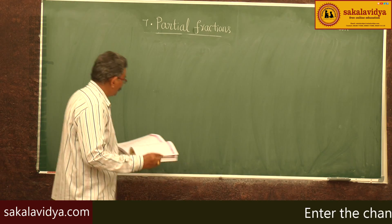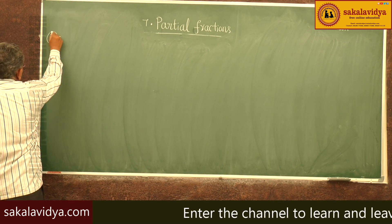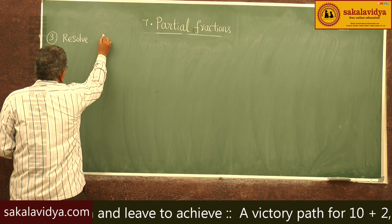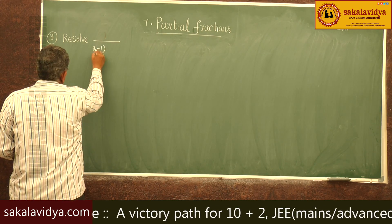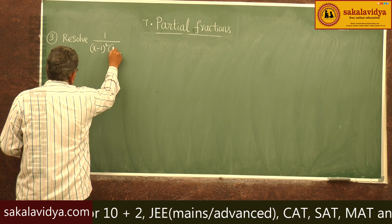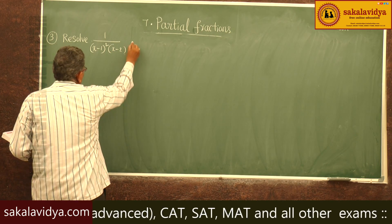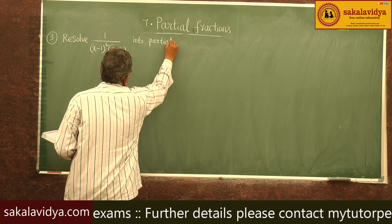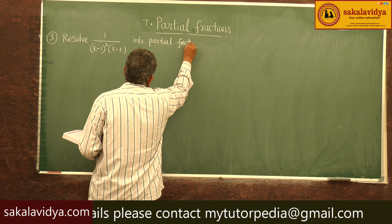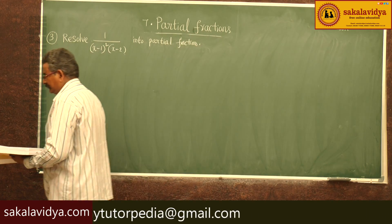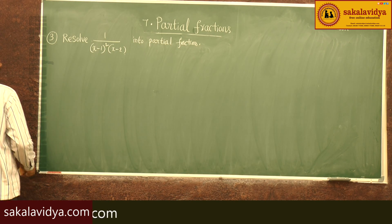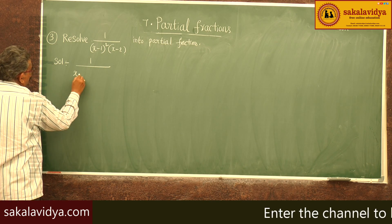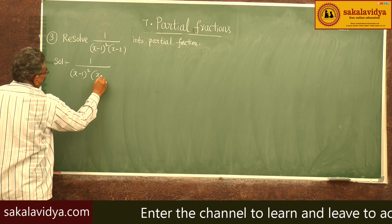Third problem: resolve 1 by (x minus 1) squared into (x minus 2) into partial fractions. So, now 1 by (x minus 1) squared into (x minus 2).